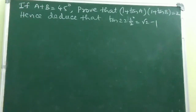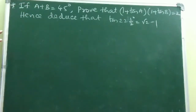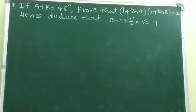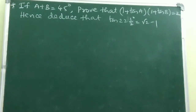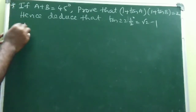Coming to the next question — also a most important model. If A + B = 45°, prove that (1 + tan A)(1 + tan B) = 2. Hence deduce that tan 22.5° = √2 - 1.